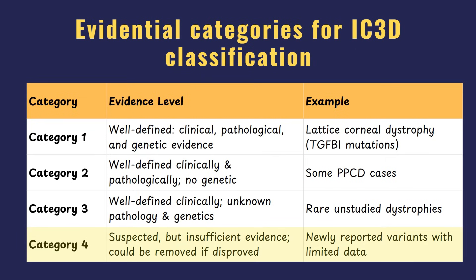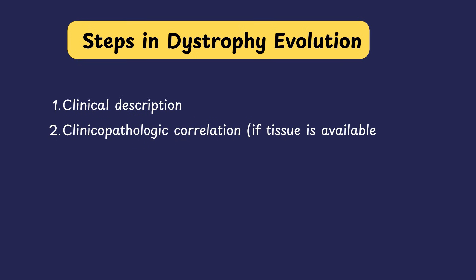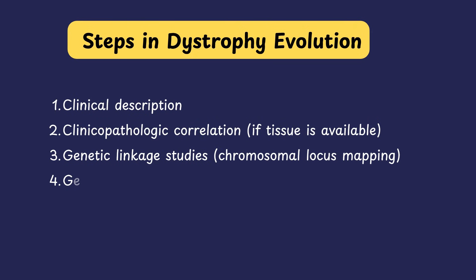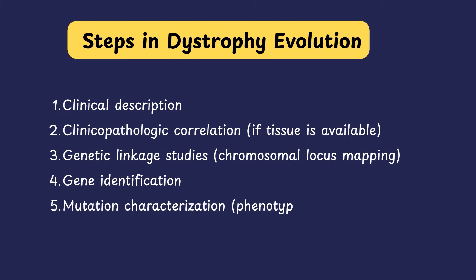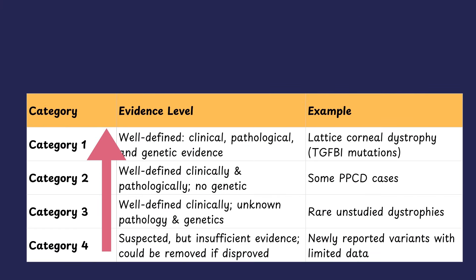Every corneal dystrophy doesn't just start in category 1 — they have to climb their way up there. First, it's spotted clinically, maybe in a patient's slit lamp examination. Then pathology confirms what's going on once tissue is available. Next is identification of the chromosome, then the gene is mapped, and later the specific mutations involved are identified. Finally, the molecular mechanism behind those mutations is understood. Once all these boxes are ticked, a dystrophy can earn its category 1 status.